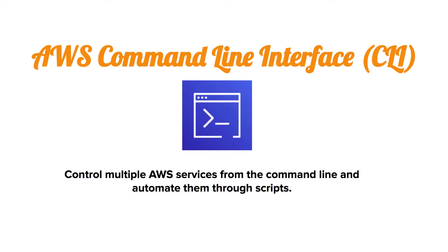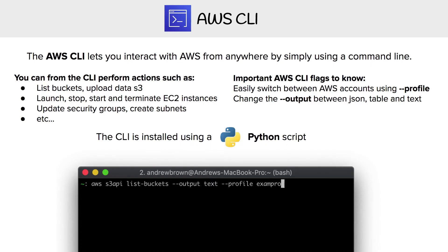Hey, this is Andrew Brown from Exam Pro. We are going to take a look at AWS Command Line Interface, also known as CLI, which controls multiple AWS services from the command line and automates them through scripts. The CLI lets you interact with AWS from anywhere by simply using a command line.